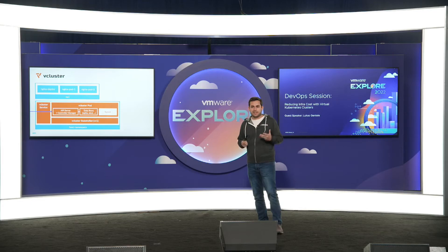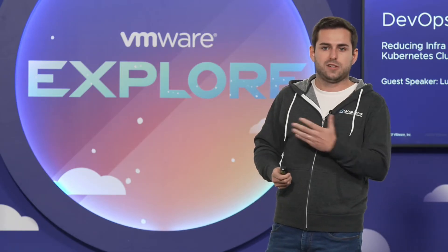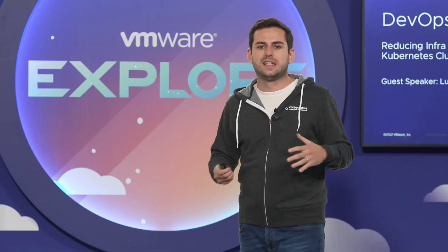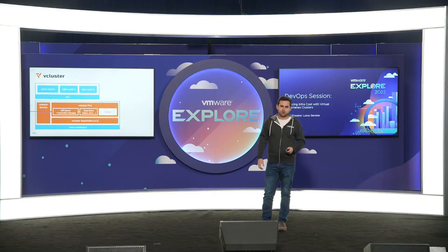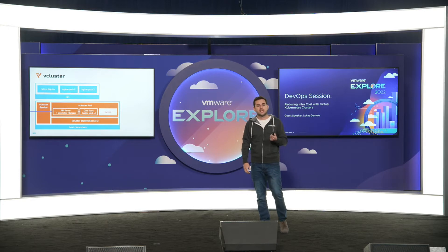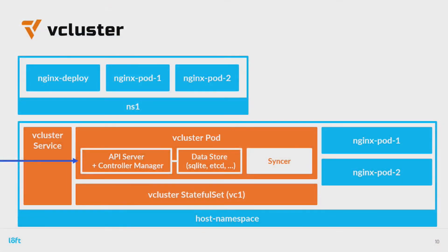The question comes up: where do these workloads actually run? That's the interesting part about virtual clusters, because the virtual cluster doesn't have a scheduler — it has a syncer. This syncer essentially copies the resources down to the underlying cluster. That means in the underlying cluster, we now see the virtual cluster's pod plus our two nginx pods. The EKS cluster — or GKE, or whatever you have — is going to schedule these workloads and put them on nodes in your cluster.